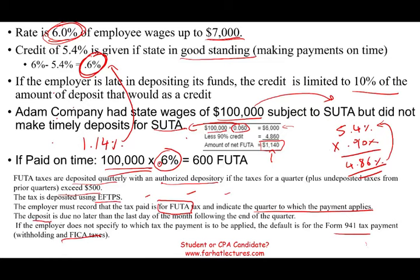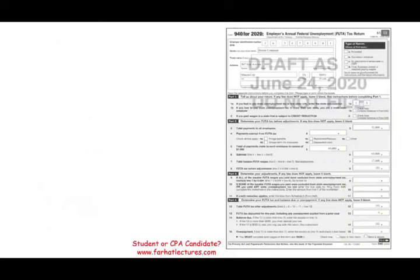When is the deposit due? The deposit is due no later than the last day of the month following the end of the quarter. Now let's take a look at an actual Form 940, which is the annual federal unemployment tax return.